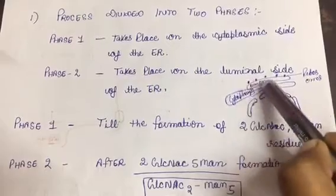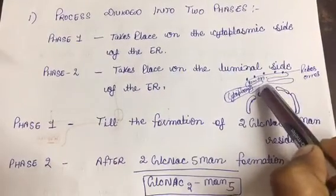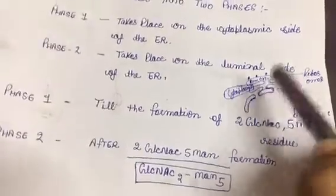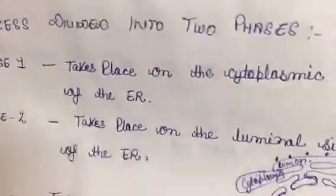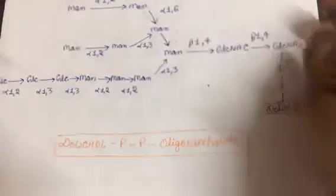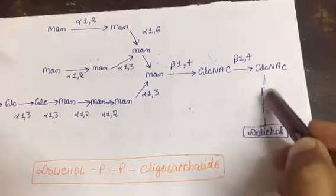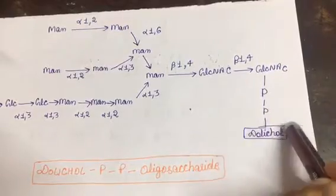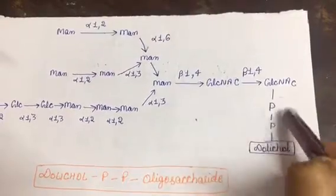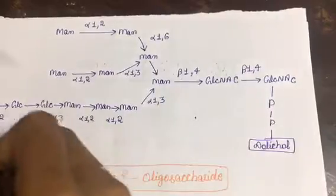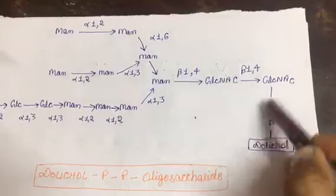And it flips to the inside, to the lumen side, where the further process happens, which is phase two of this process. This is dolichol phosphate, this is dolichol which helps. This phosphate helps in holding this whole structure together. So this is the importance of this structure, this phosphate group.